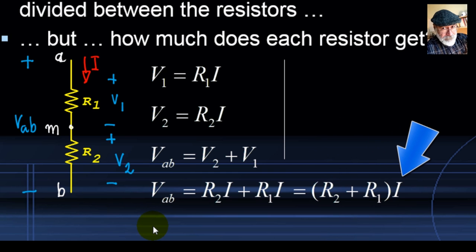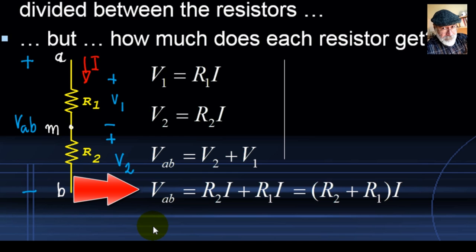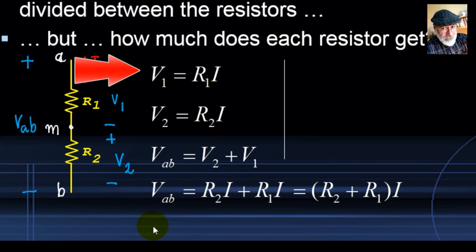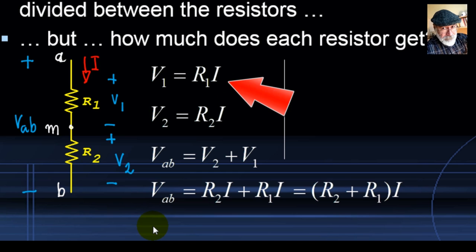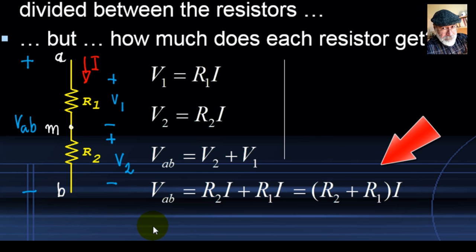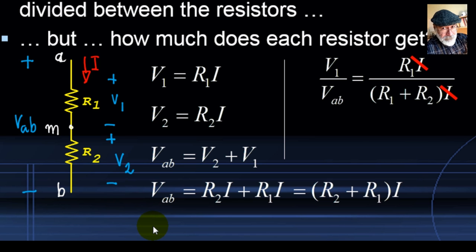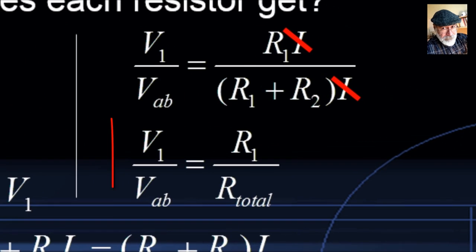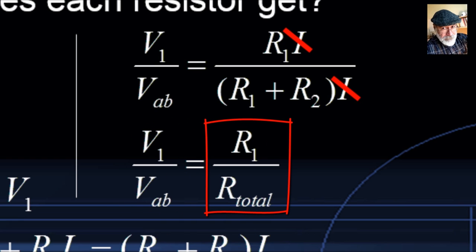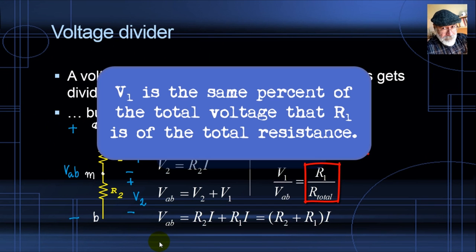We want to know what percentage of the total voltage Vib is V1. Dividing V1 = R1·I by Vib = (R1 + R2)·I, the current cancels out, and we get: V1 is the same percent of the total voltage Vib that R1 is of the total resistance R1 + R2. Same percent.